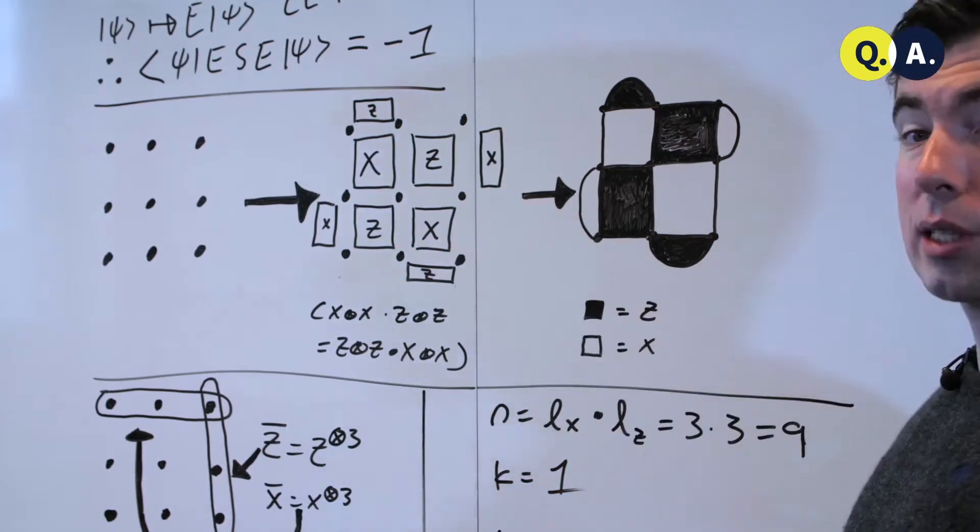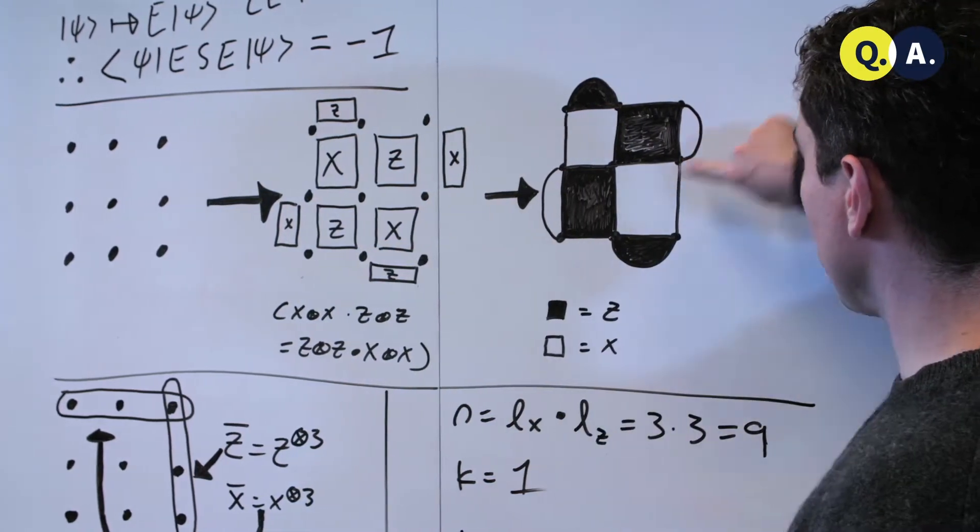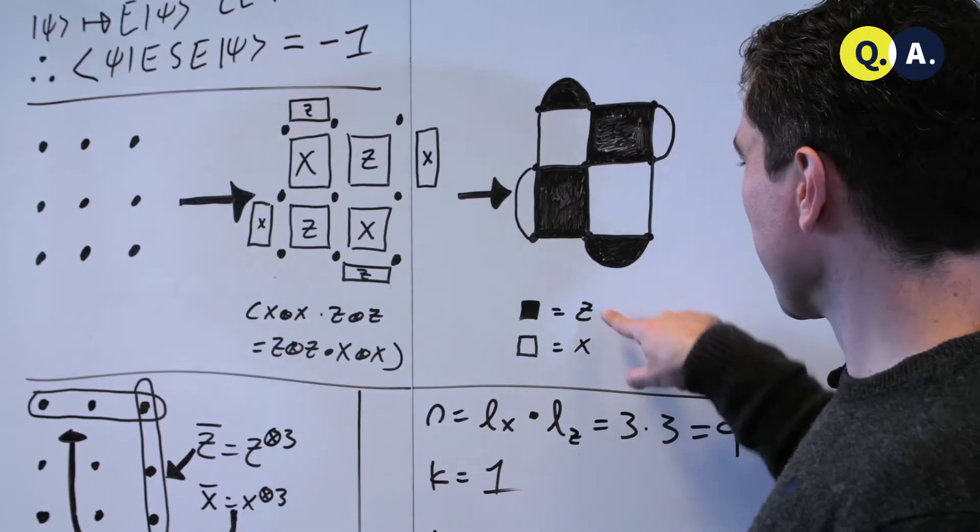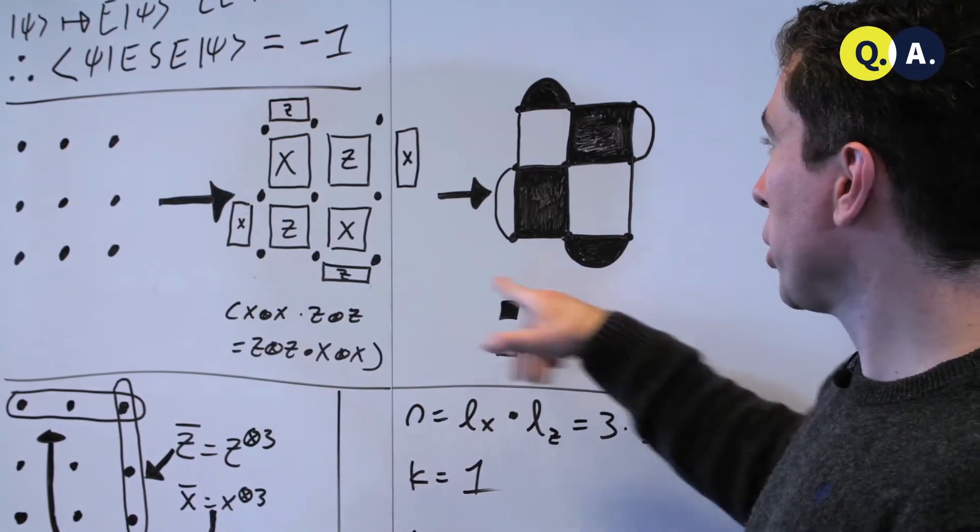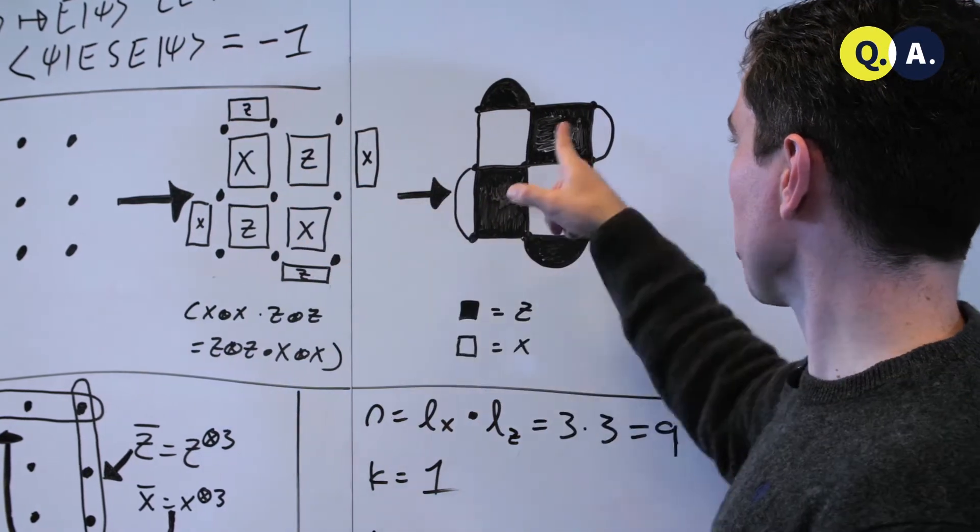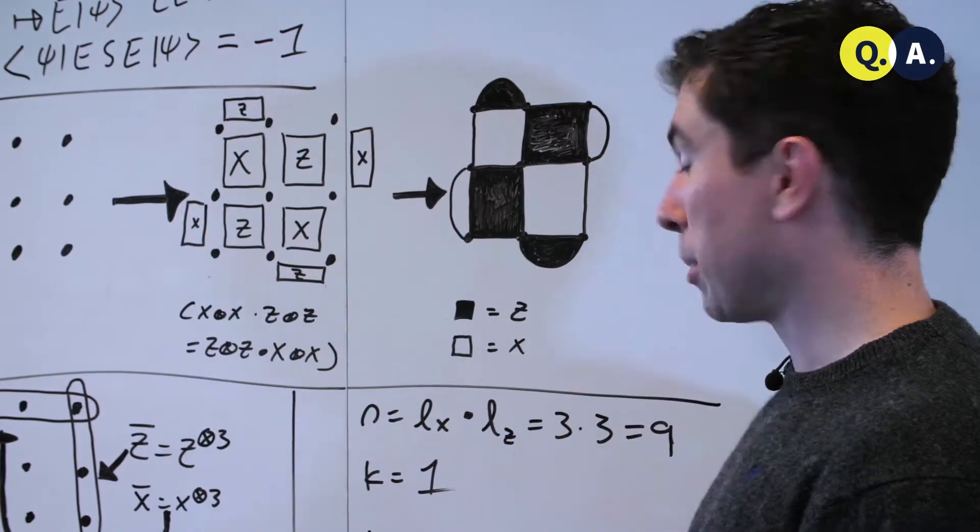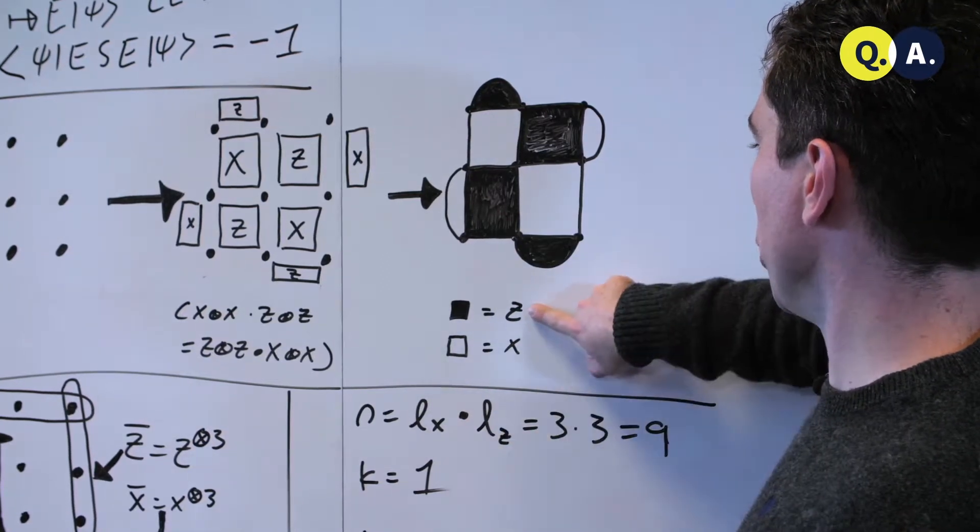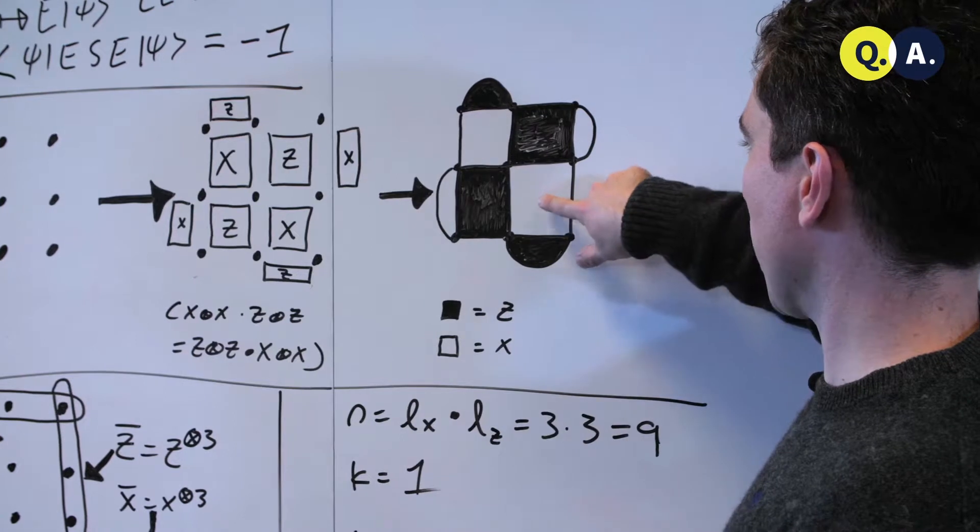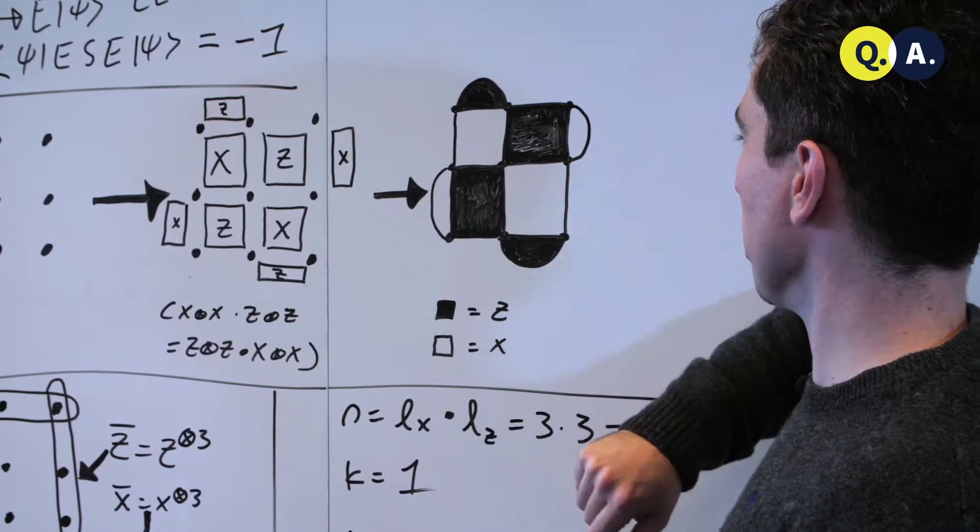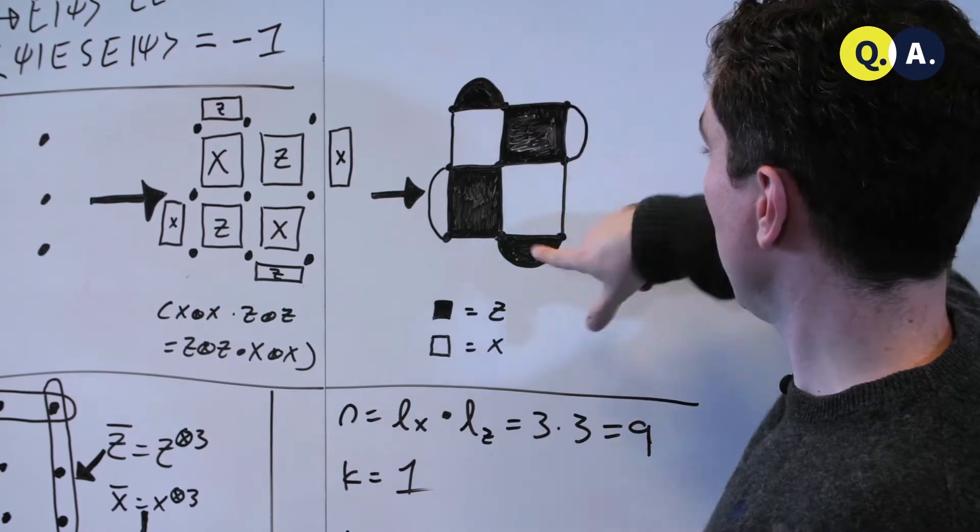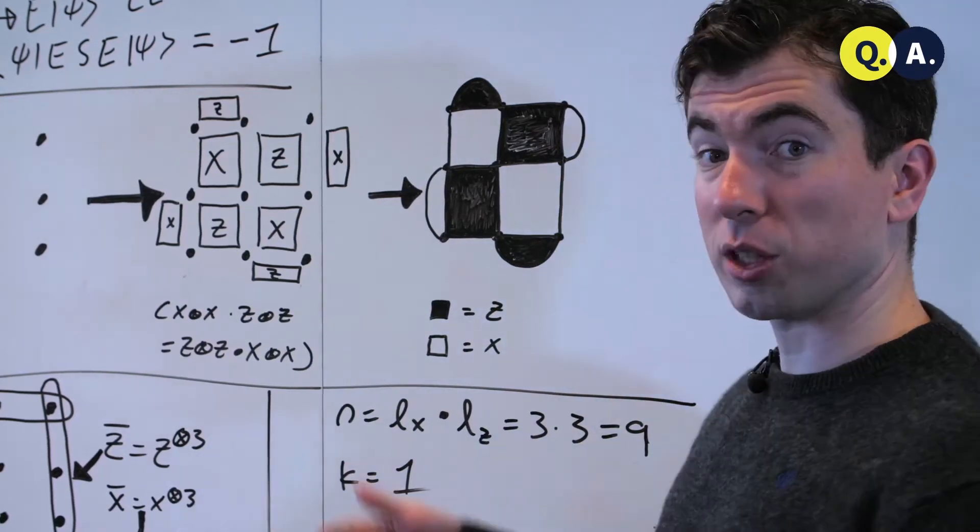This arrangement of stabilizers and data qubits becomes this surface code picture. And typically, people will include a little legend to let you know which of these letters corresponds to which of these colors, because it's not clear a priori. So here I've used black tiles to host z stabilizers, and I've used white tiles to host x stabilizers. Here we can see the weight 2 stabilizers that are going around the perimeter, and the weight 4 stabilizers that are on the interior.